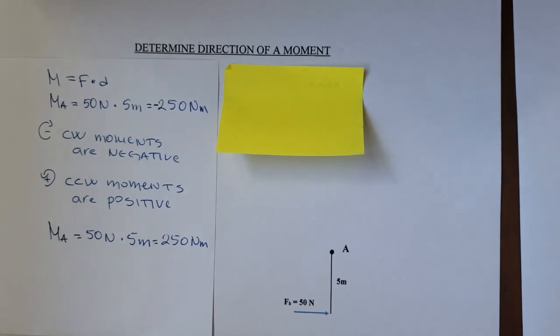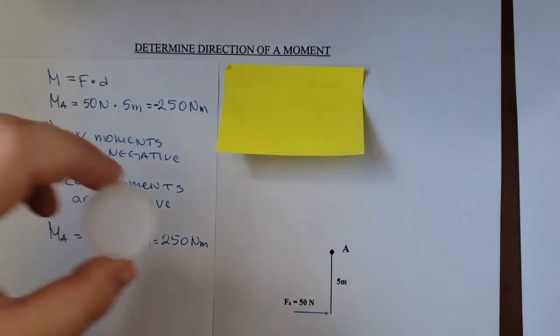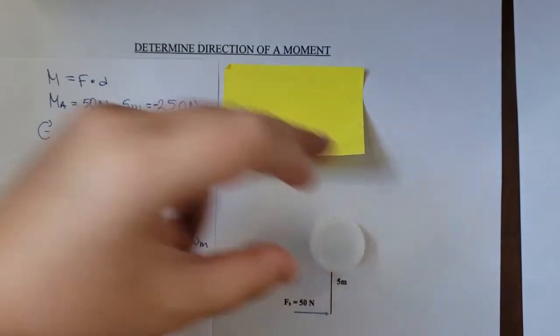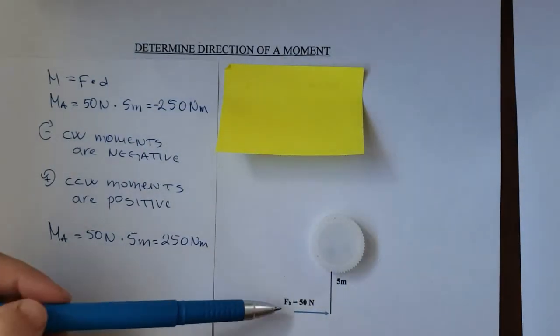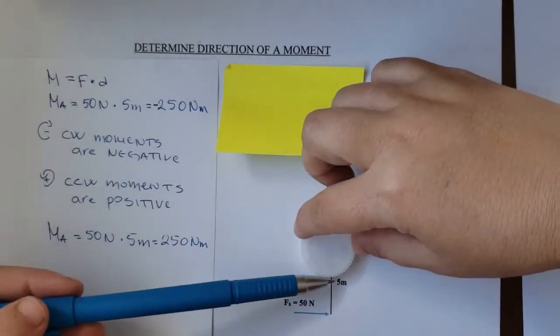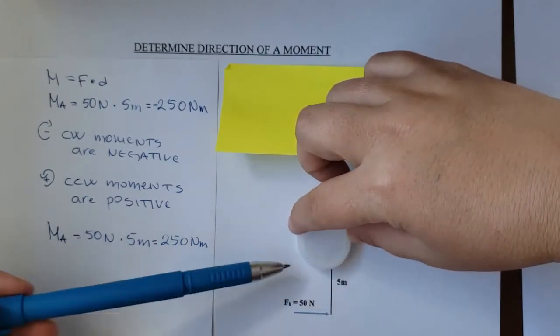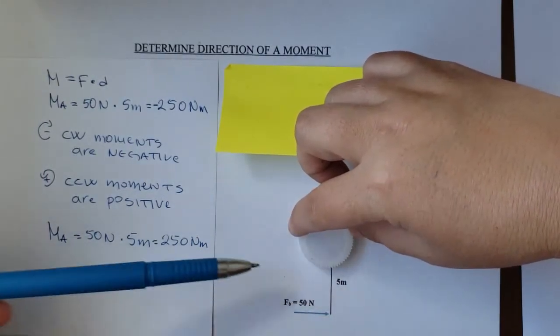So now for the direction. I place the cap here at point A. I pretend that this force FB acts here on the cap, down the cap in that direction.